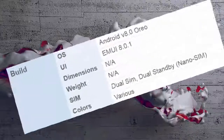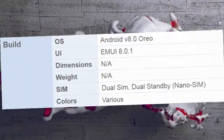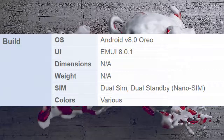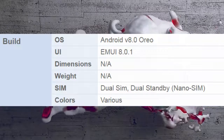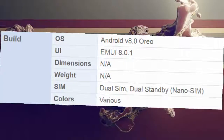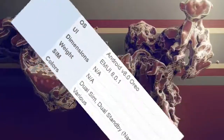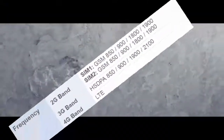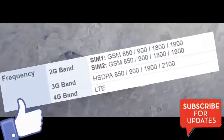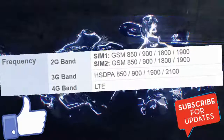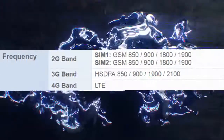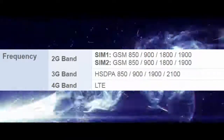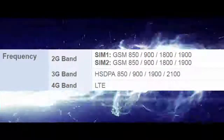Build: Android v8.0 Oreo, EMUI 8.0.1. Dimensions and weight: N/A. SIM: dual SIM, dual standby, nano SIM. Colors: various. Frequency 2G bands SIM 1: GSM 850, 900, 1800, 1900. SIM 2: GSM 850, 900, 1800, 1900.